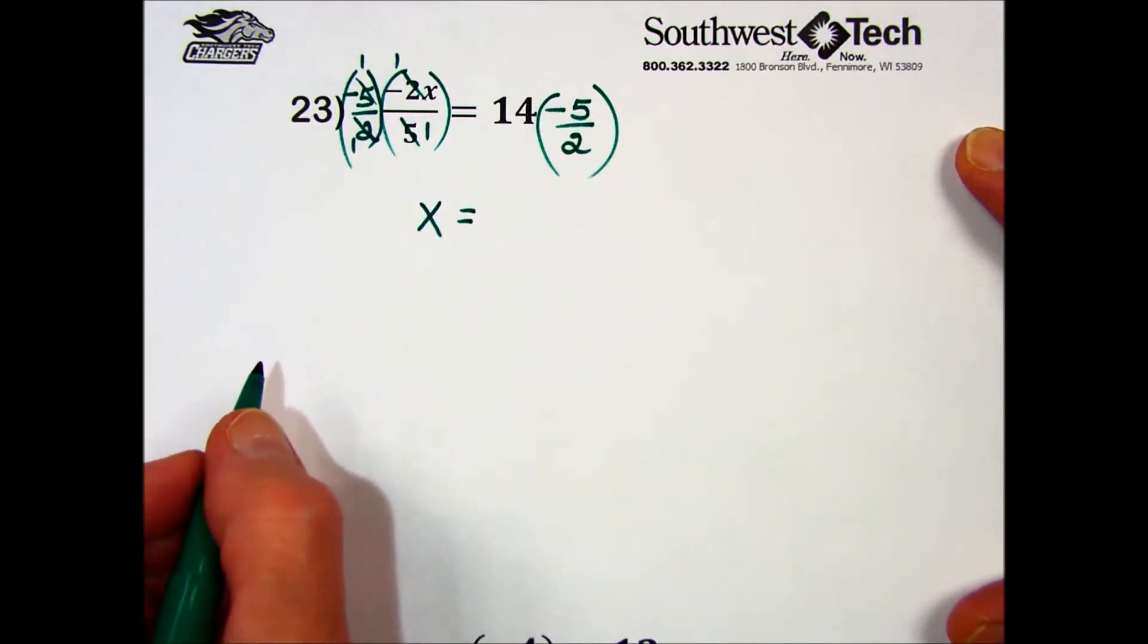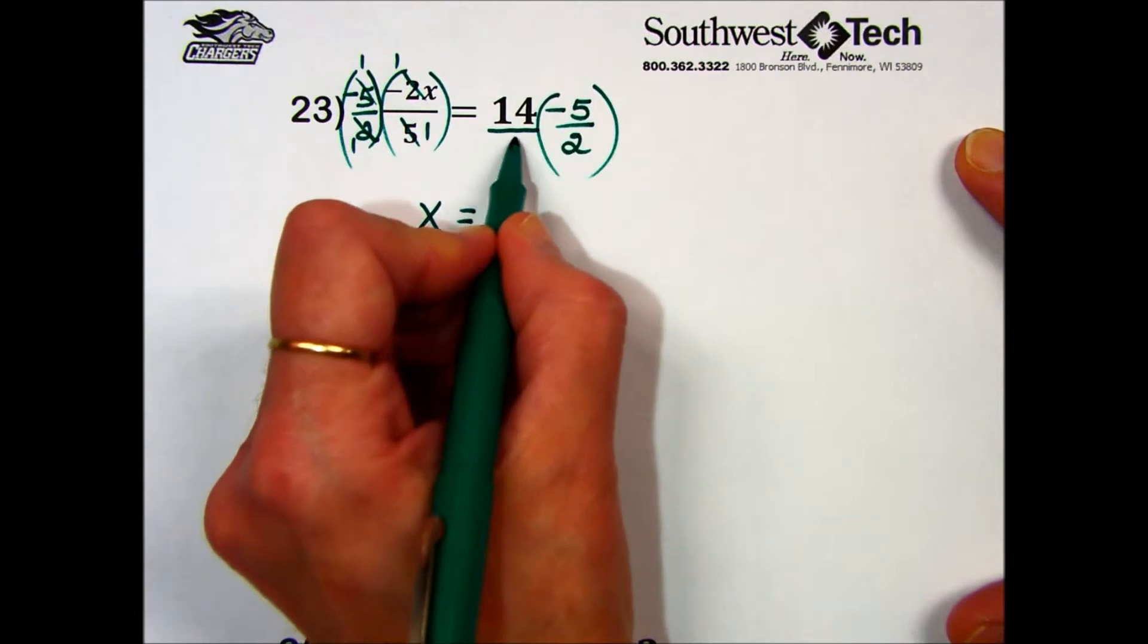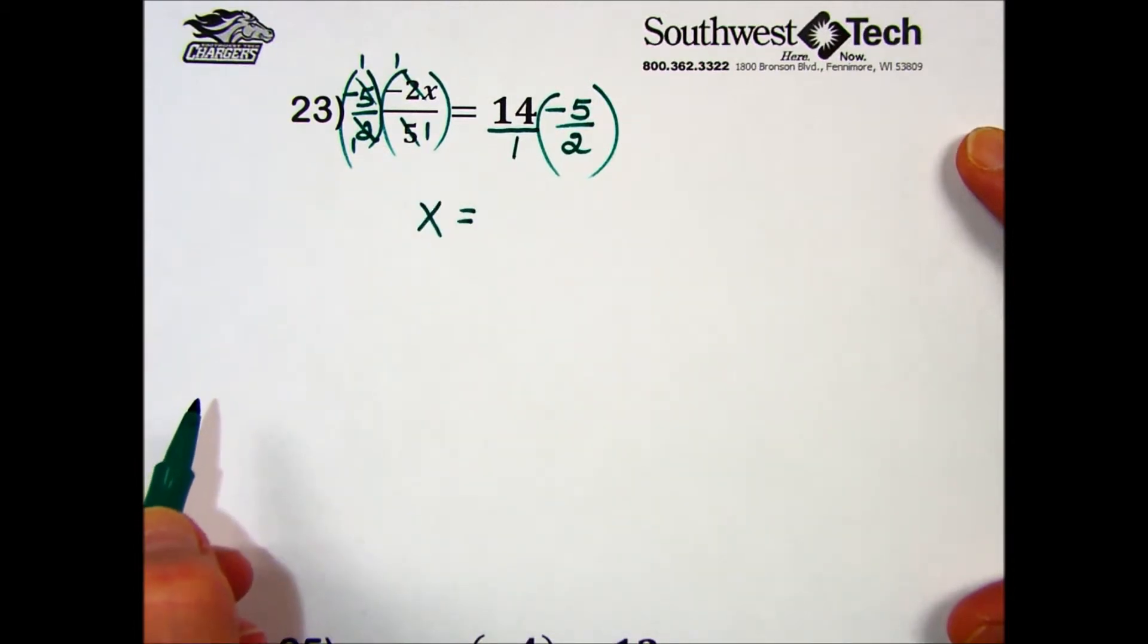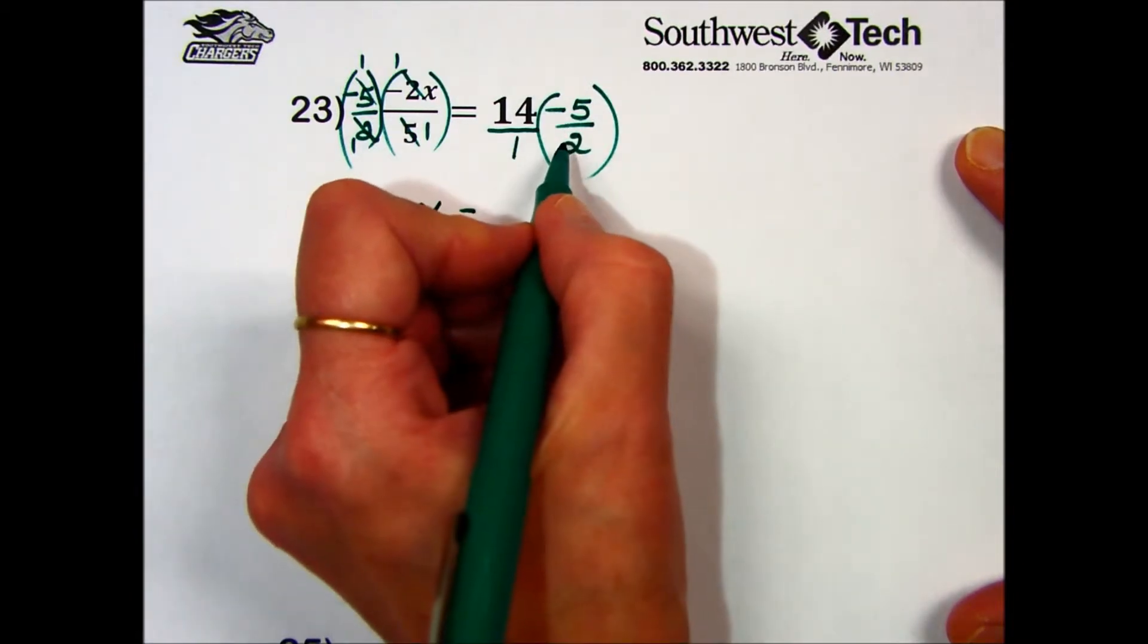And to simplify on the right-hand side, that whole number, 14, is understood to have a denominator of 1. I'm multiplying these two fractions together. If I can reduce ahead of time, it's going to make it easier for the calculation.